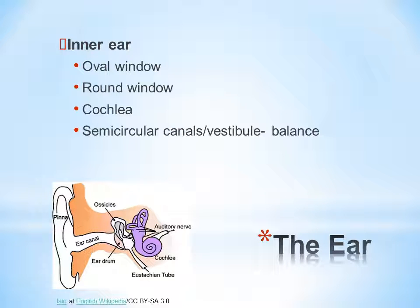The inner ear functions to conduct sound to the central nervous system as well as to assist in balance. The oval window is at the beginning of the inner ear and vibrates when bone strikes it. The round window adjusts pressure. The cochlea helps with hearing, and the semicircular canals and the vestibule help with balance.